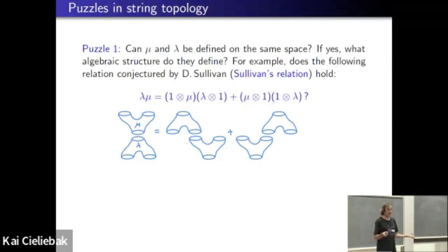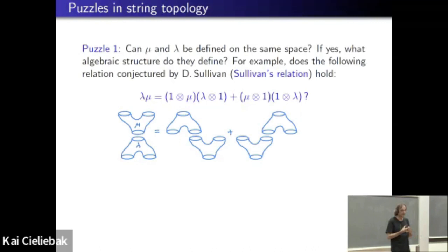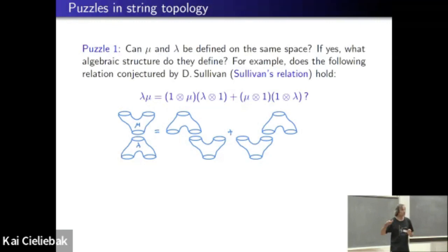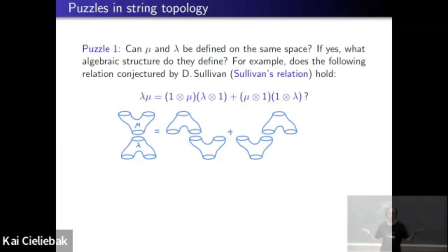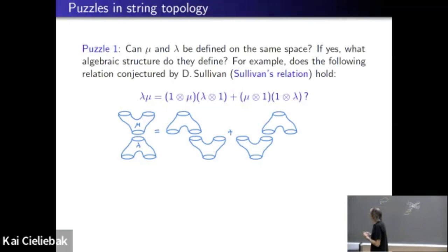This question is not obvious. Our first attempt was to work harder and define the coproduct λ on the whole loop space without modding out the constants — it doesn't quite work. Then we tried descending the product from the homology of Λ to the relative homology — that doesn't work either; there are examples showing it can't. So assuming we can put them on the same space and show how, the question is: what algebraic relations do they satisfy? Sullivan gave us a suggestion of one relation between the product and coproduct, which he optimistically wrote down, although they weren't even defined on the same space.